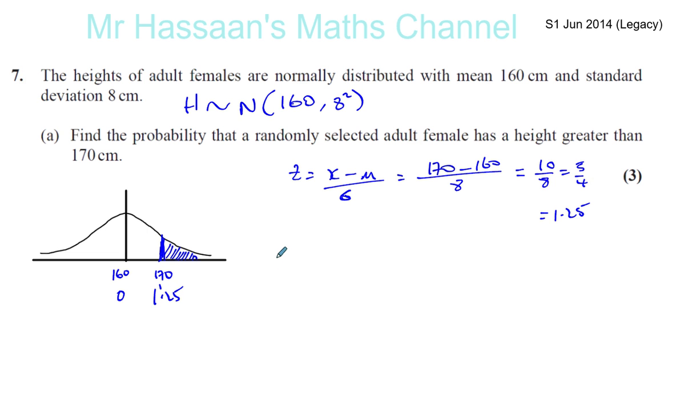So we want to find the probability, basically, that the height was greater than 170. Okay, that's what we had to find. And we worked out that that's the same as finding the probability that Z is greater than, we said 170 minus 160 over 8.